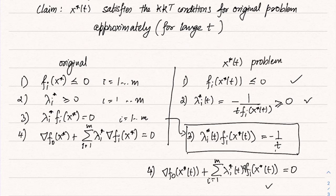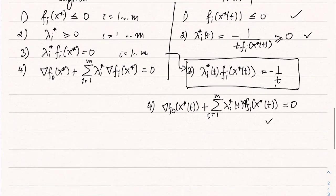As we increase t, the complementary slackness condition becomes more and more accurate because it goes to zero. Therefore we can see that x*(t) tends to x* — we are approaching the optimum. This kind of characterization also allows us to determine or bound the duality gap.